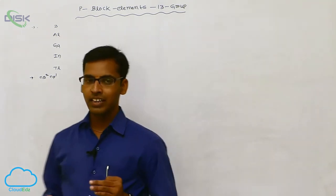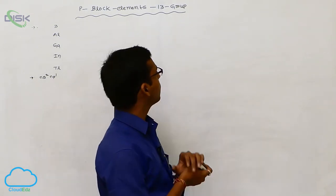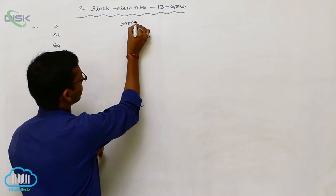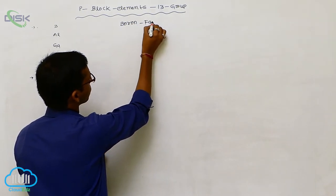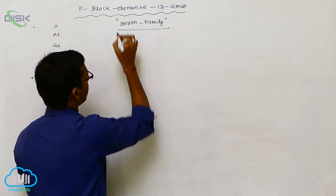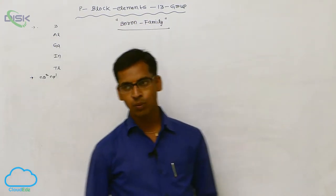These 13th A group elements are also called the boron family. This is called the boron family because it starts from boron. That is why it is called the boron family.